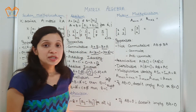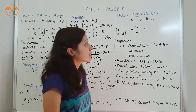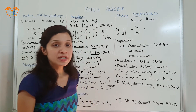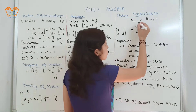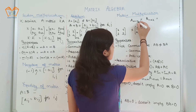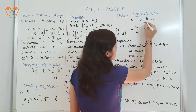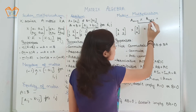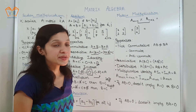Matrix multiplication: two matrices can be multiplied with each other only when the number of columns of the first matrix is equal to the number of rows of the second matrix.